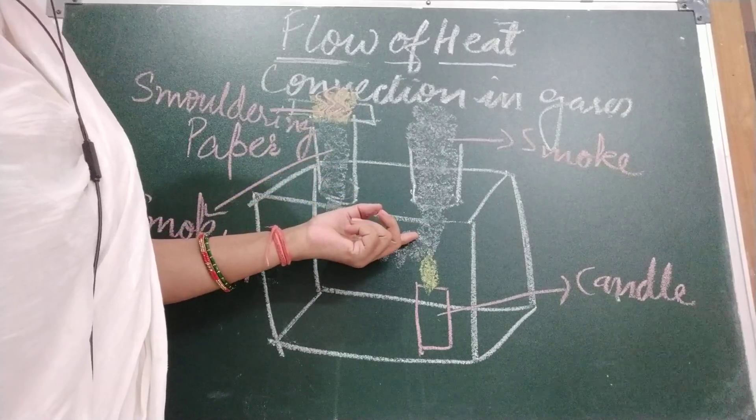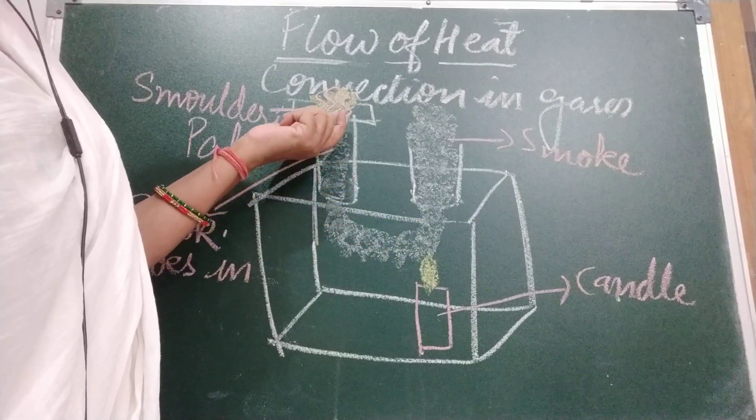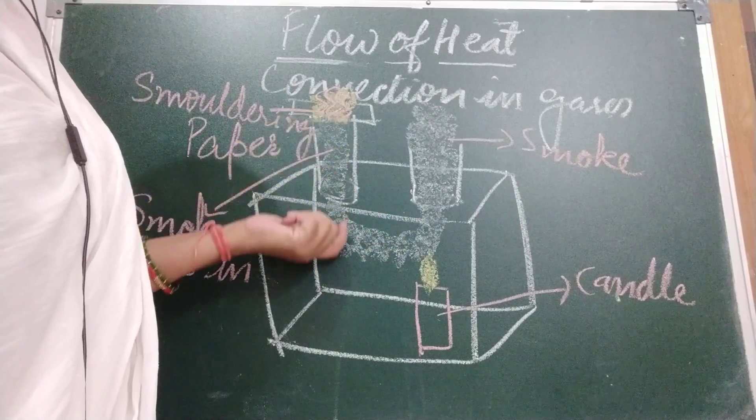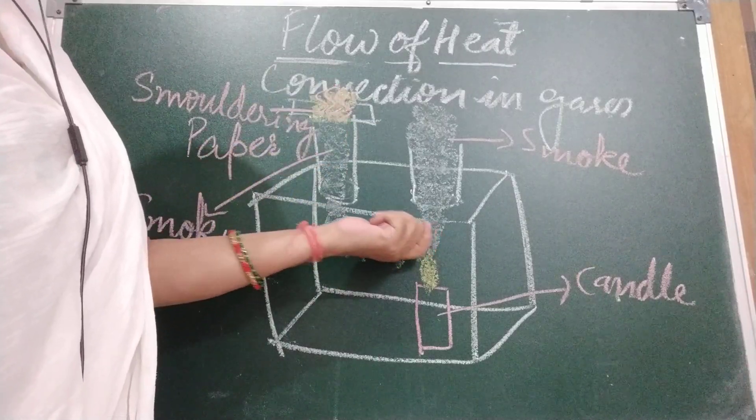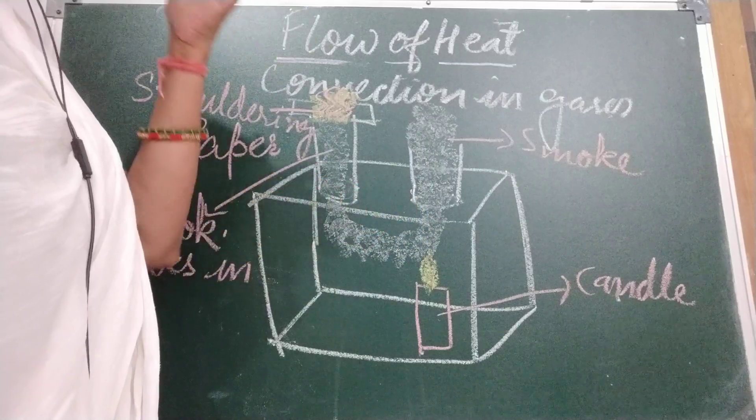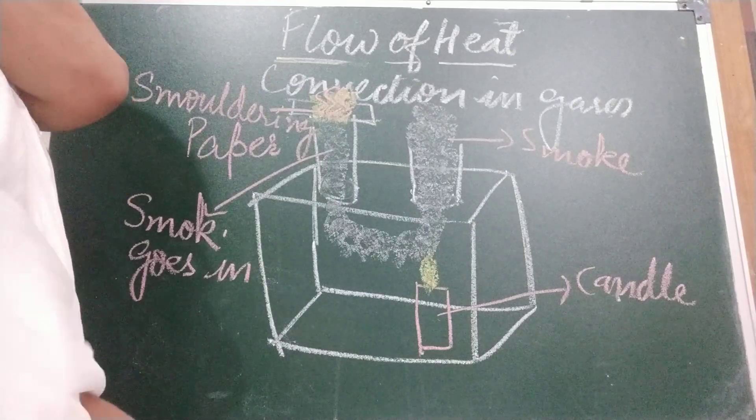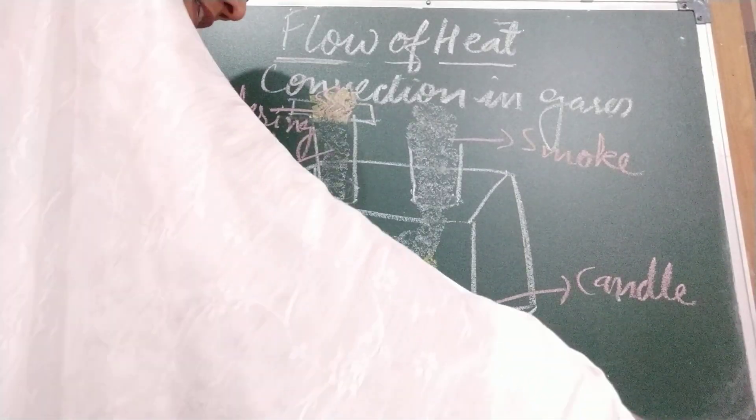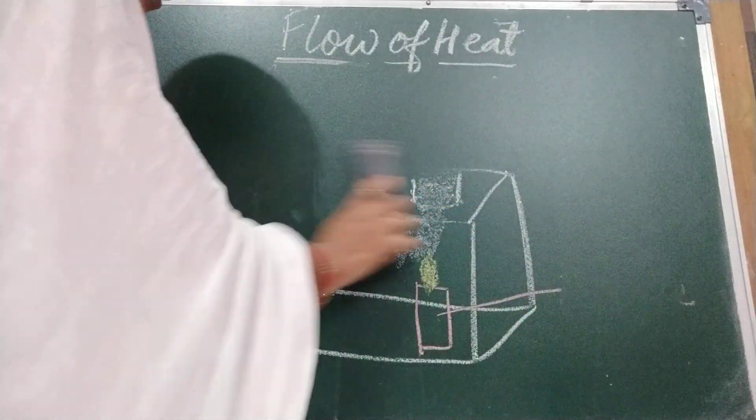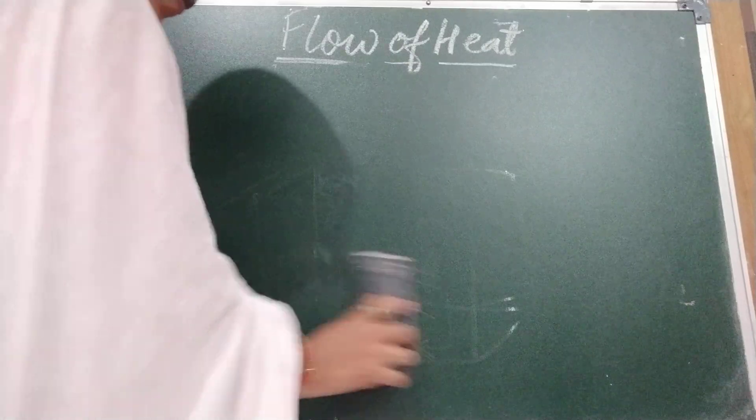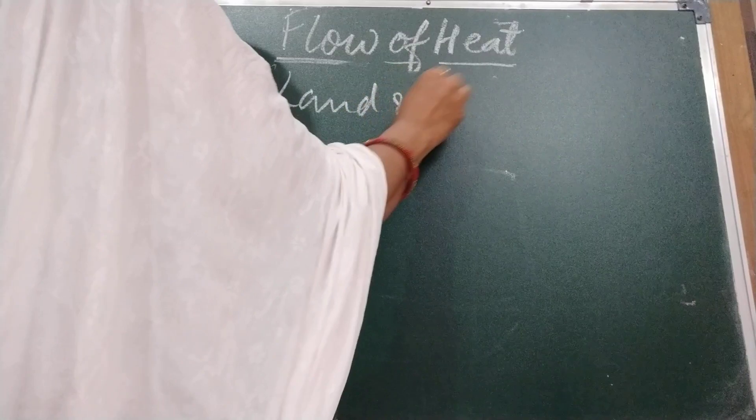So to fill up this place, the fresh air comes or cold air comes from this side. But what happened here? There is smoke. So smoke is sucked to fill this place. Now children, one more example of this is sea and land. Convection in gases, one more example is land and sea breeze.